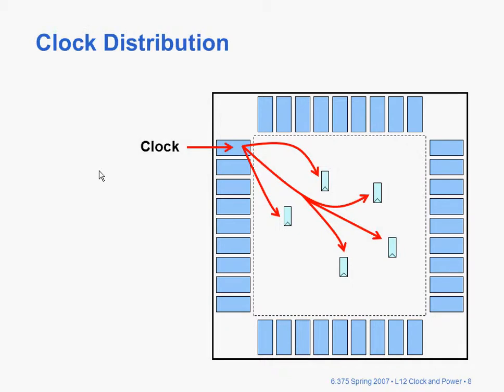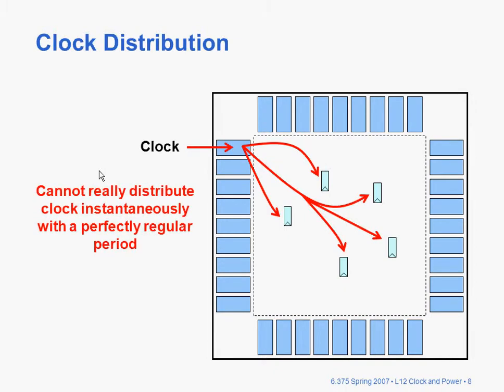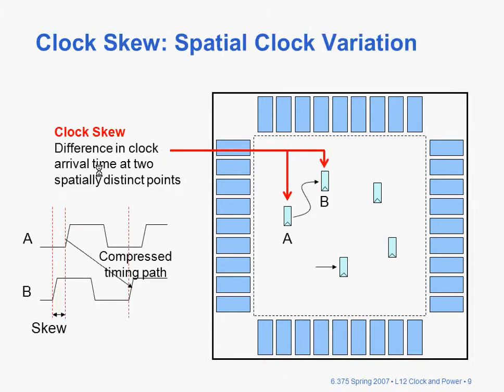The idea in a synchronous system is that you want all registers to be fed at the very same time with the same clock period. And you can't redistribute a clock instantaneously with perfect regularity for a variety of reasons — one of them being that the registers are at different locations on the chip.